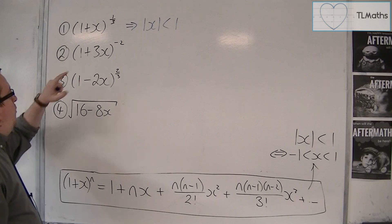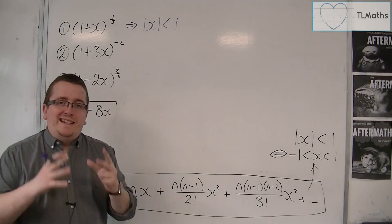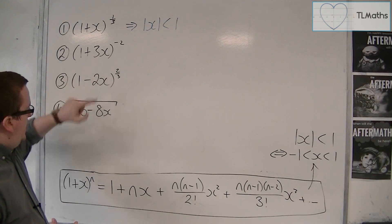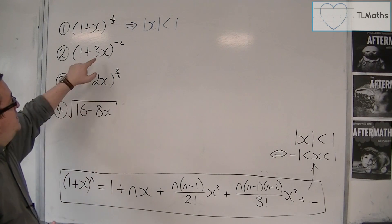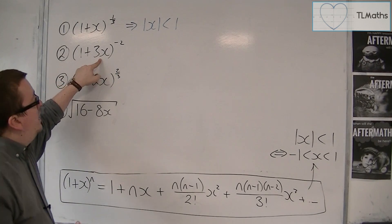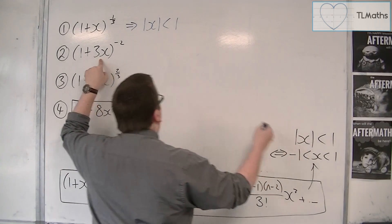Now, if we've got 1 plus 3x to the minus 2, we've already discounted that n doesn't come into this. But in this case, we have x being replaced with 3x. So if we've replaced x with 3x, we must replace this x with 3x.